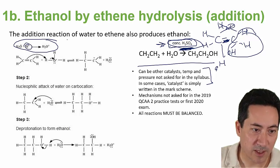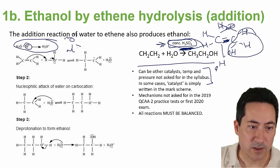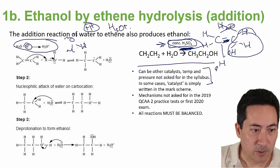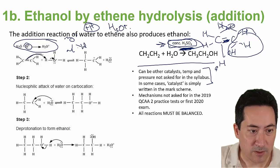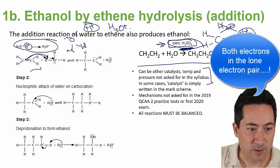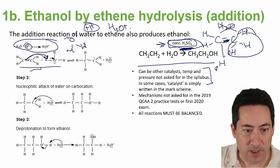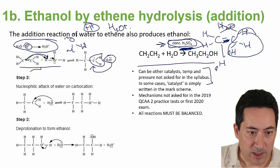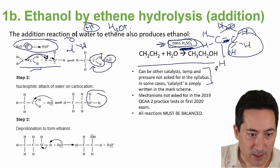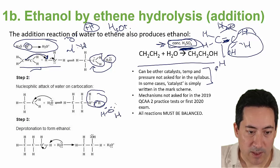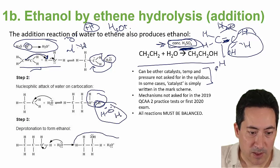H⁺ is very positive and sticks to the free electron pairs on water. We don't actually have free H⁺ floating around in water — it's actually the hydronium ion, H₃O⁺. Arrows in the mechanism always go from negative to positive; a double-headed arrow means both electron pairs are attracted, a single arrow means just one. When this complex joins together, you get a carbocation, and the water's negative end is attracted to it, forming a complex that then loses a proton, giving you the ethanol product.